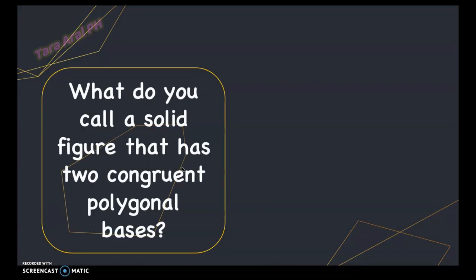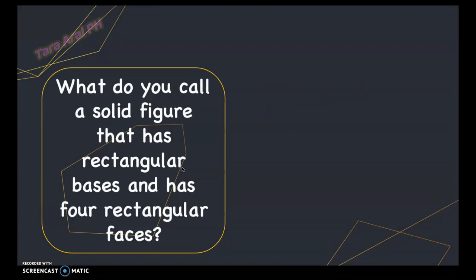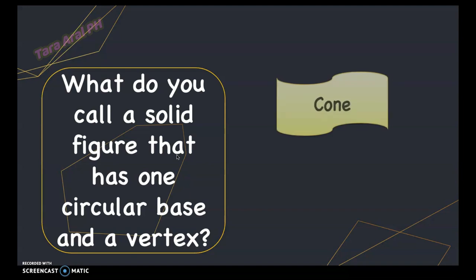Next: what do you call a solid figure that has two congruent polygonal bases? As long as there are two congruent polygonal bases, it's a prism — or a cuboid in general. Next: what do you call a solid figure that has rectangular bases and four rectangular faces? Since the faces are rectangles and the bases are rectangles, it is a rectangular prism. Next: what do you call a solid figure that has one circular base and one vertex? It has one circular base, so that means it's a cone.